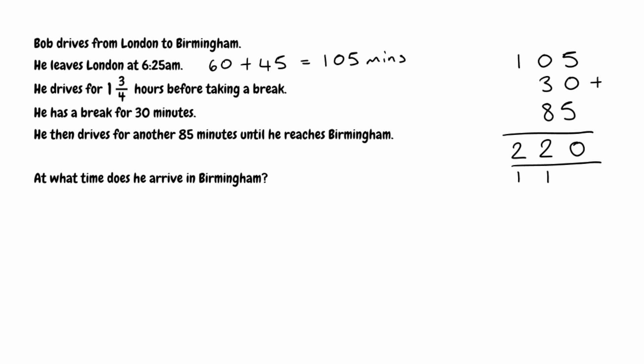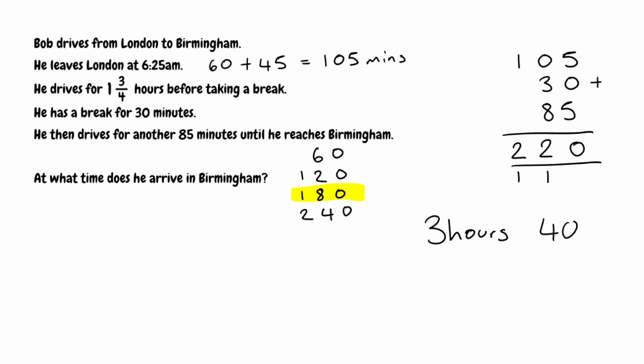Now we convert 220 minutes back into hours and minutes. There are 60 minutes in one hour, 120 in two hours, 180 in three hours, and 240 in four hours. So 60 fits into 220 three full times — that's three hours, which equals 180 minutes. With a total journey of 220 minutes, there are a remaining 40 minutes. So 220 minutes is the same as three hours and 40 minutes.